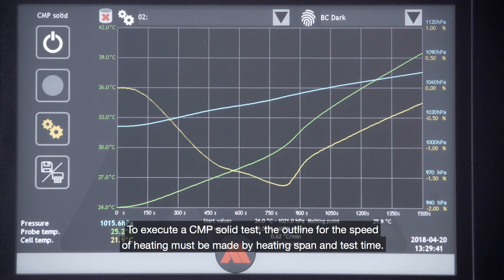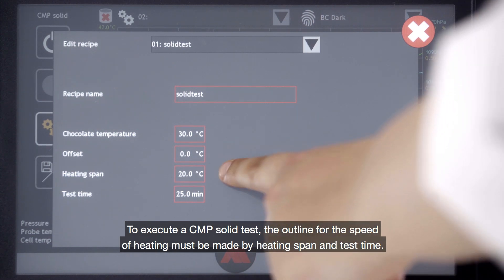To execute a CMP solid test, the outline for the speed of heating must be made by heating span and test time.